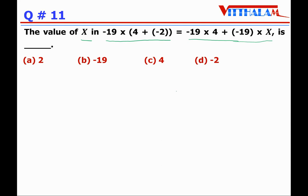Normally, an average student will first remove the bracket — 4 plus minus 2 means plus 2 — then multiply with minus 19 to get minus 38. Then minus 19 into 4 is 76, then plus minus 19x, and from there find x, which gives x equals minus 2.